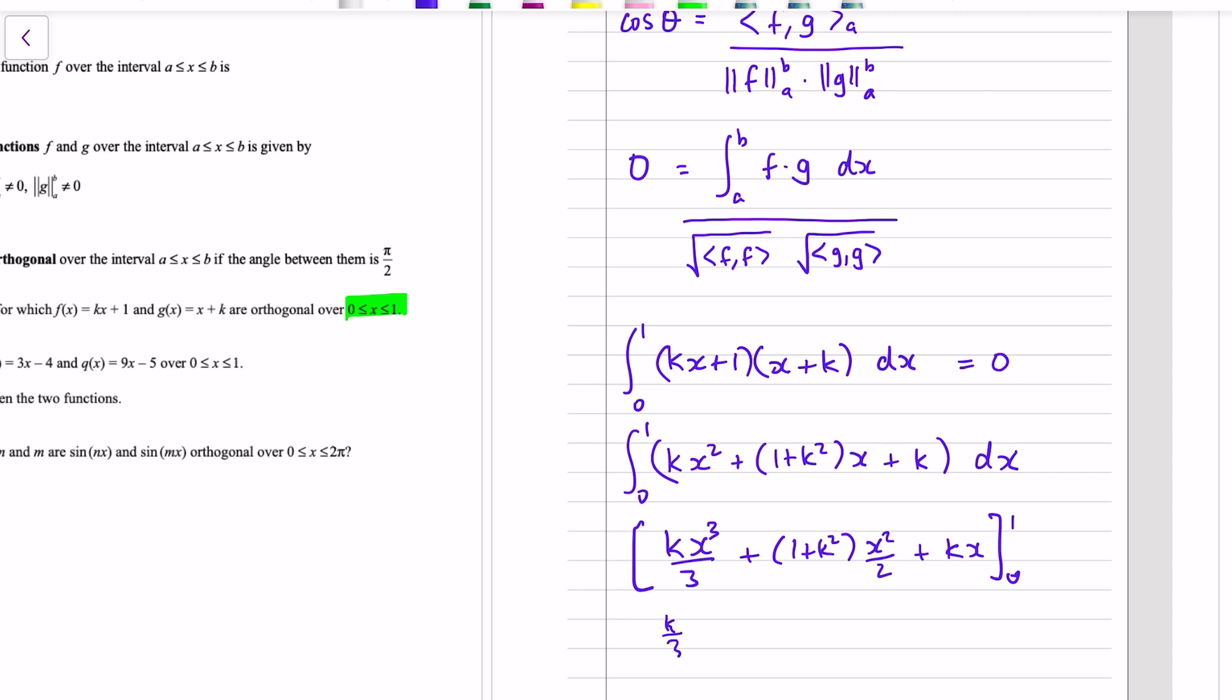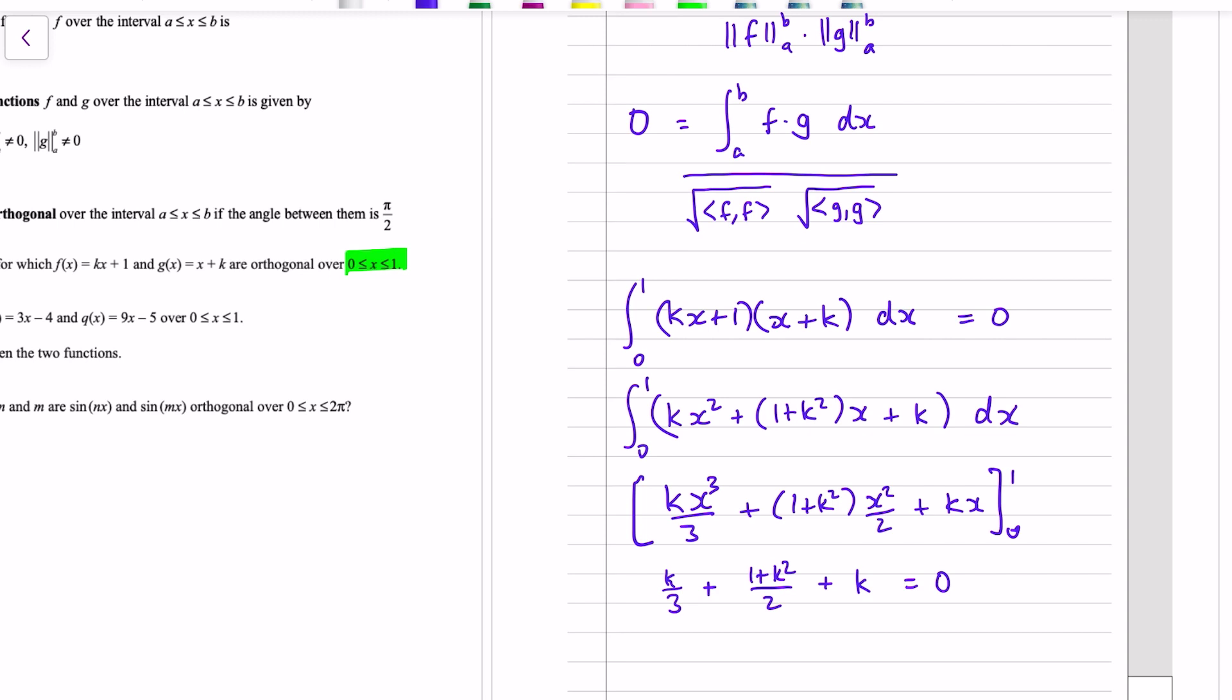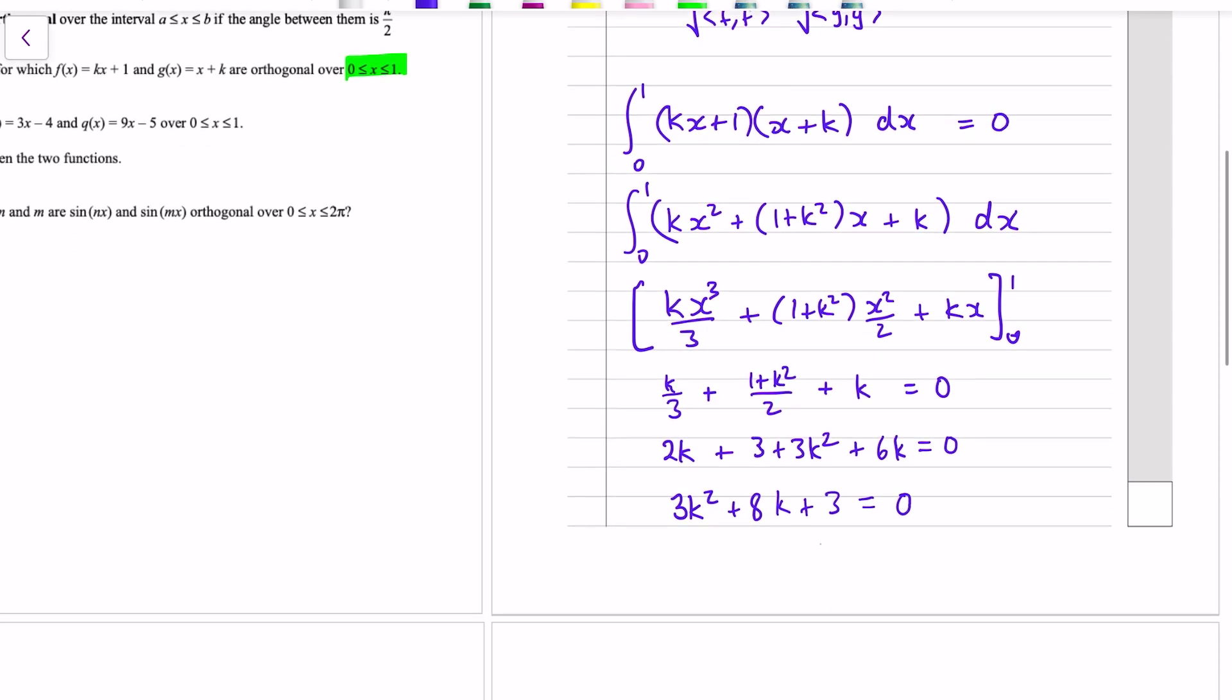So expanding this out, kx squared, we've got two linear terms, 1 times x and k squared times x. So 1 plus k squared all times x. And then a constant k, integrating between 0 and 1. kx cubed over 3, 1 plus k squared is a constant, x squared over 2, kx between 1 and 0. If we sub in the 0, all the x's disappear. So we get 0 for everything. But subbing in 1, we get k over 3 plus 1 plus k squared all over 2, and then k, that equals 0.